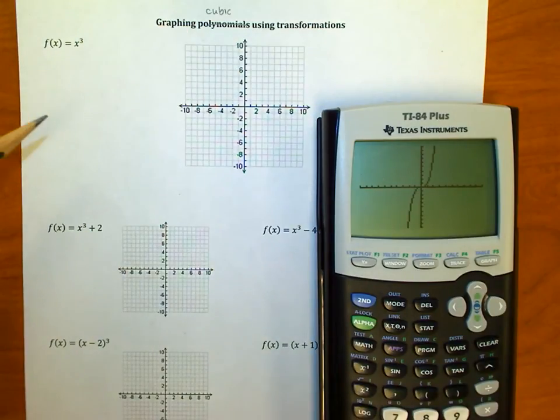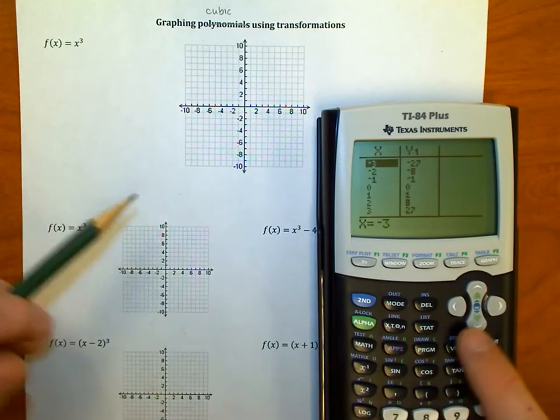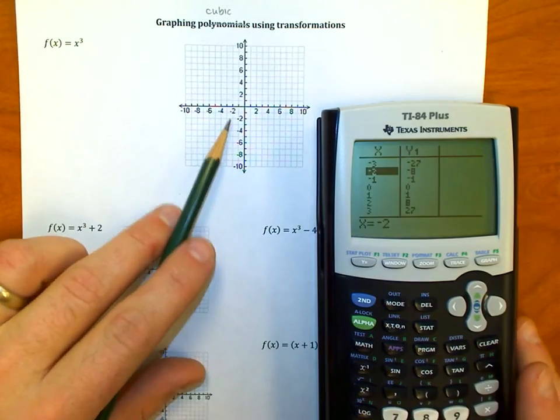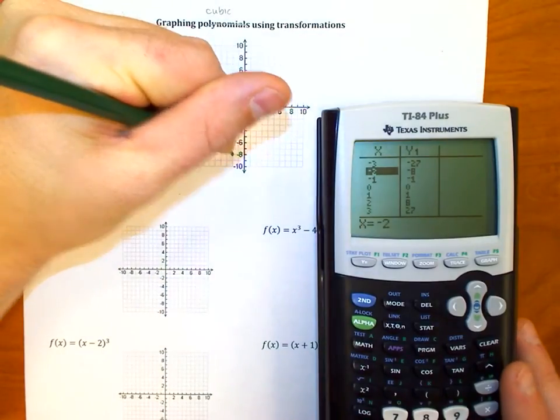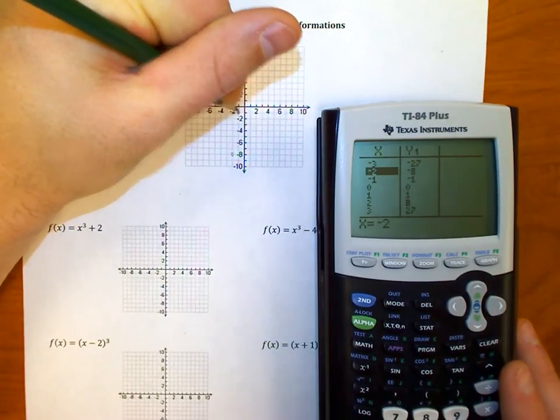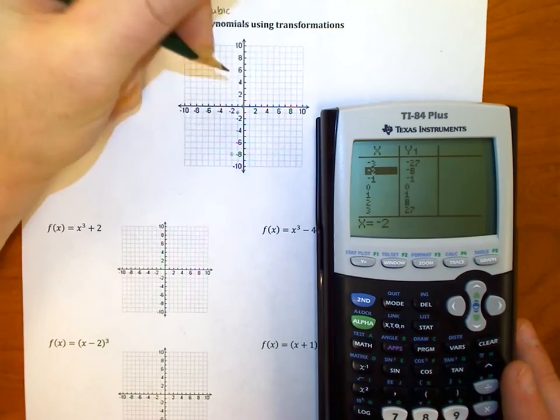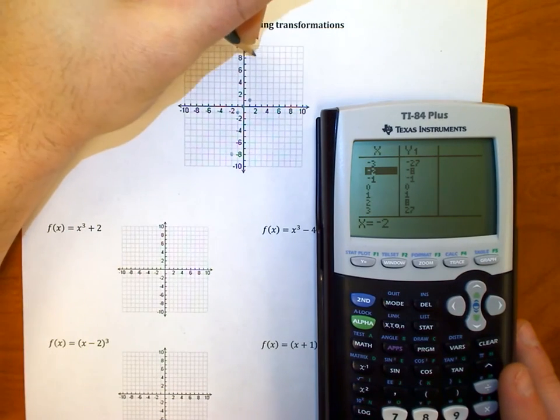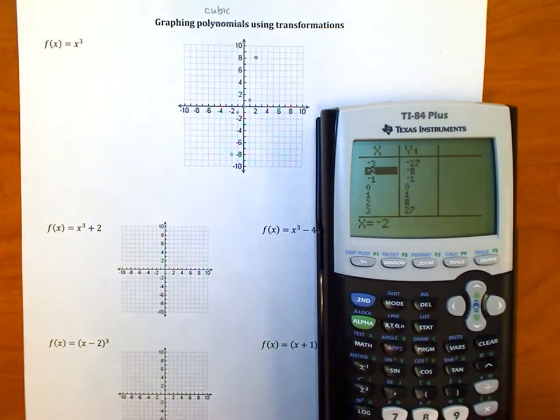If I wanted to graph that accurately, I would use the table and that's going to help me find some points that are nice and neat. So negative 2, negative 8 would be a point; negative 1, negative 1; 0, 0; 1, 1; and 2, 8 are all points that are going to be on the graph. There's my curve.